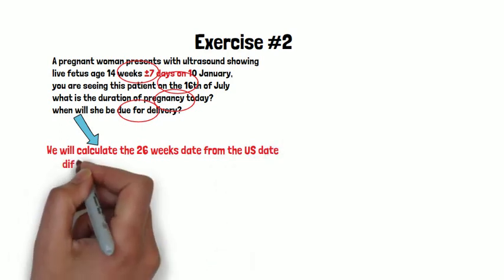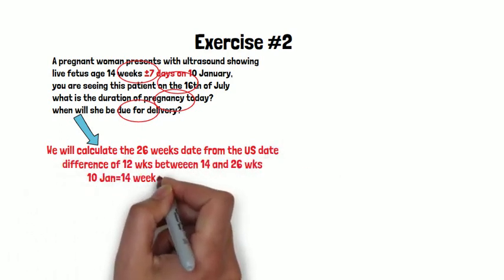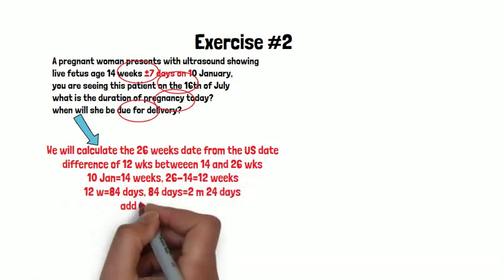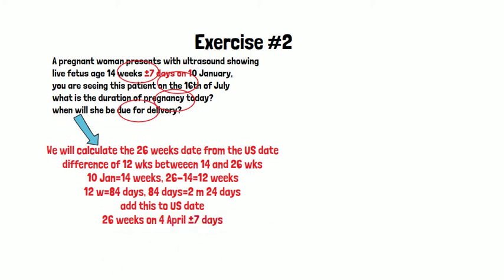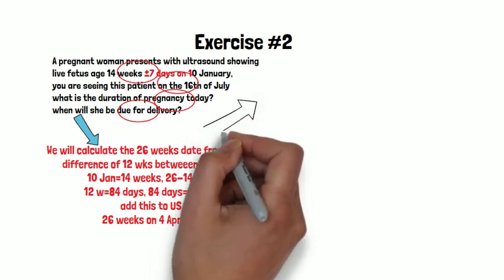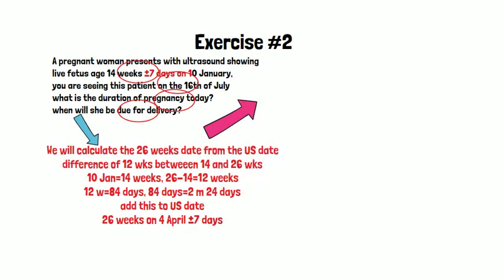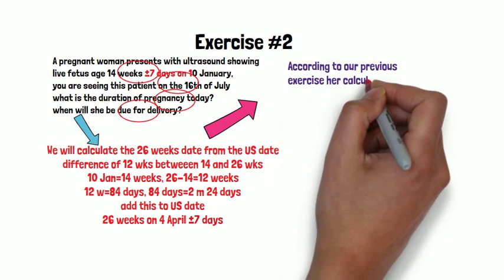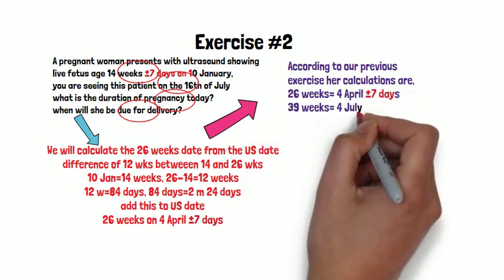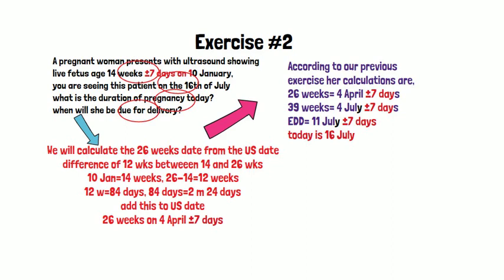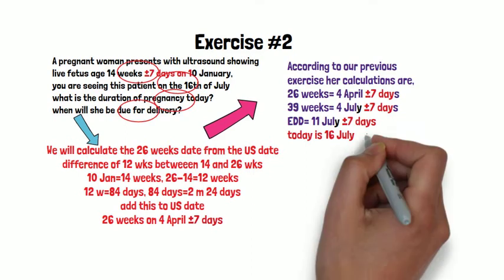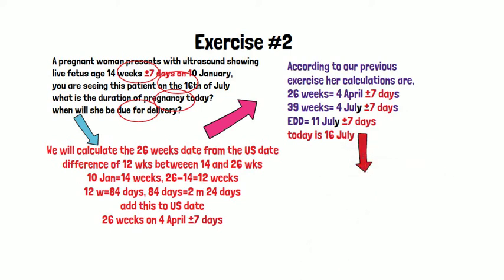We calculate when she will be 26 weeks. The difference between 26 and 14 is 12 weeks. Twelve weeks is equal to 84 days, which is 2 months and 24 days. Her ultrasound date is the 10th of January. Adding this, her 26th week will be on the 4th of April plus or minus 7 days. She will be 39 weeks on the 4th of July plus or minus 7 days, and her expected date of delivery is the 11th of July. You are seeing her on the 16th of July, so she is now 40 weeks and 5 days plus or minus 7 days.